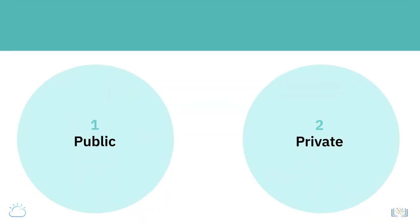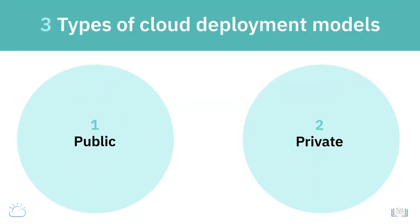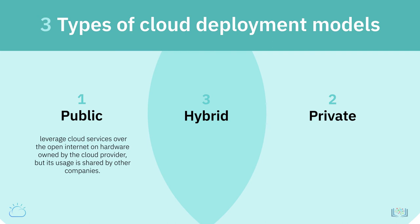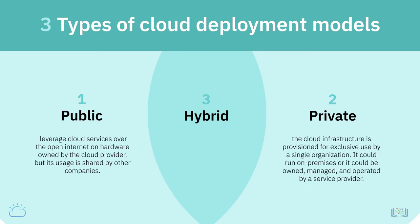There are three types of cloud deployment models: public, private, and hybrid. Public cloud is when you leverage cloud services over the open internet on hardware owned by the cloud provider, but its usage is shared by other companies. Private cloud means that the cloud infrastructure is provisioned for exclusive use by a single organization.